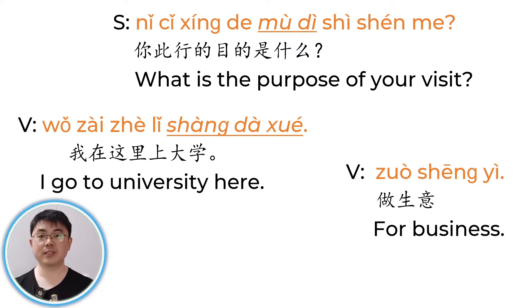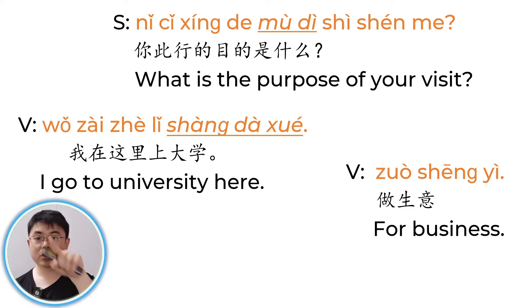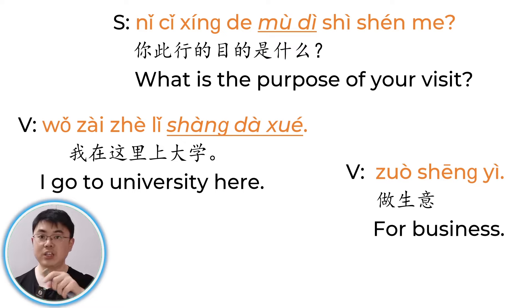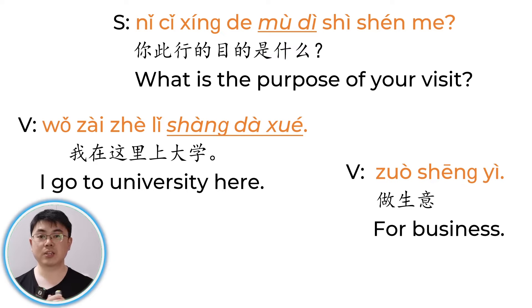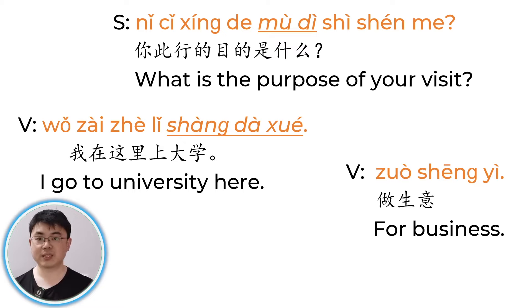你此行的目的是什么? If you are a student, answer this way: 我在这里上大学. 我 means me, 在这里 means here, 上 means to go to, 大学 means university. I'm here to go to university. 做生意 — 做 means do, 生意 means business — do business.